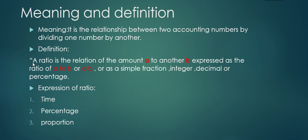The definition: a ratio is the relationship of the amount A to another amount B, expressed as A to B or A is to B. It can be expressed as a simple fraction, integer, decimal, or a percentage. Basically, when you have a ratio, it can be expressed in different forms.